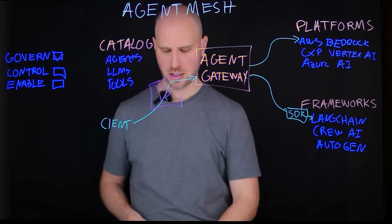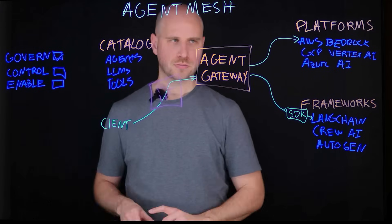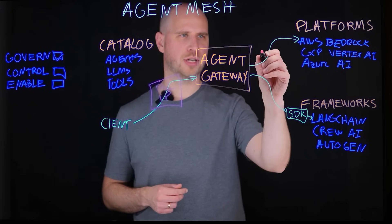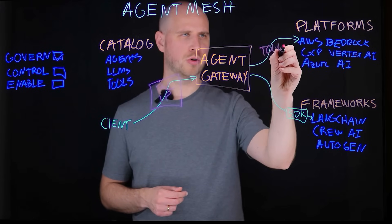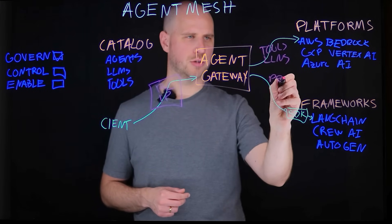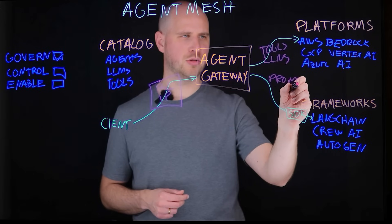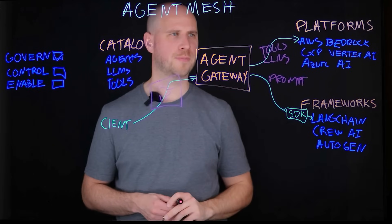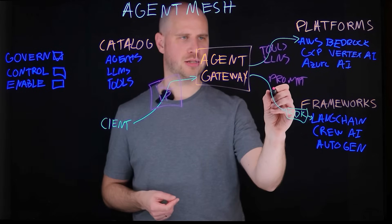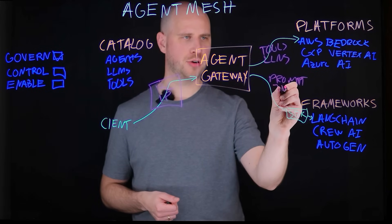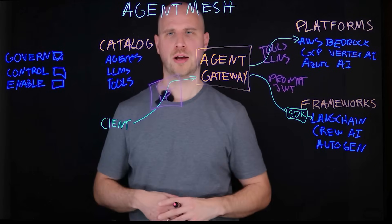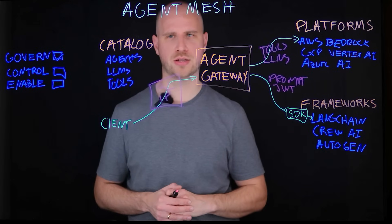But maybe even more interestingly, thanks to the native capability in the agent gateway that communicates with those different platform and framework agents, you actually have the ability to enforce various things. You can control, for example, which tools, which LLMs, or what prompt you're supposed to be sending to the underlying agent system. Or you can add context such as the claims or other information that exists in a JWT token, allowing the agent to have more context of how it's operating.